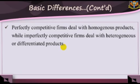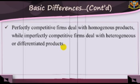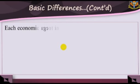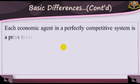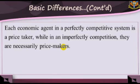2. Perfectly competitive firms deal with homogeneous products. 3. Imperfectly competitive firms deal with heterogeneous or differentiated products. Each economic agent in a perfectly competitive system is a price taker, while in an imperfectly competitive industry, they are necessarily price makers.